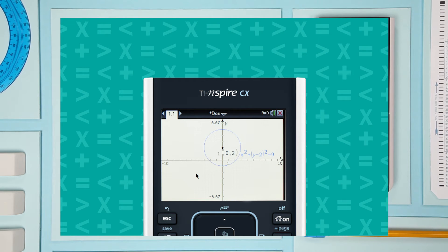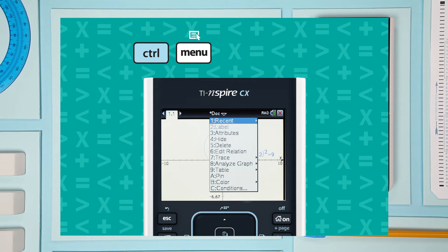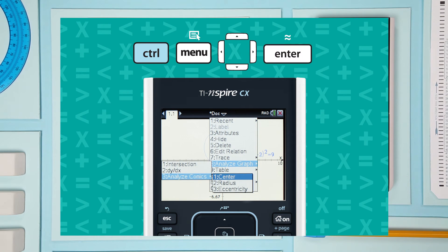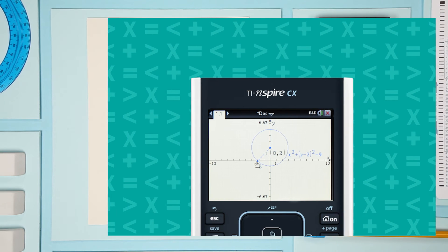Follow basically the same sequence to find the radius. Put your cursor on the circle. See how it changes? Press Control. Menu. Select Analyze Graph. Analyze Conics. This time, select Radius. Boom! The radius is 3.